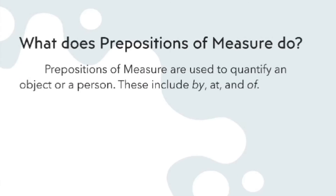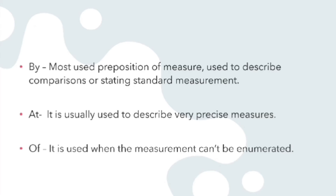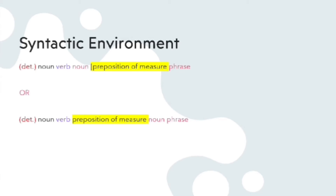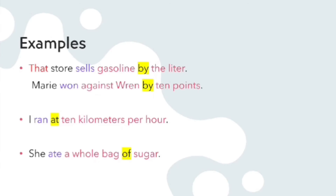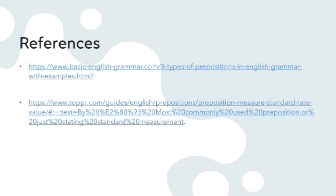Prepositions of measure are used to quantify an object or a person. These include the words 'by,' 'at,' and 'of.' 'By' is the most used preposition of measure, used to describe comparisons or state standard measurements. 'At' is usually used to describe very precise measures, and 'of' is used when the measurement cannot be enumerated. The syntactic environment is an optional determiner followed by a noun, verb, and a noun phrase with either the preposition of measure before or in between it. Examples: 'That store sells gasoline by the liter.' 'Marie won against Ren by 10 points.' 'I ran at 10 kilometers per hour.' 'She ate a whole bag of sugar.'